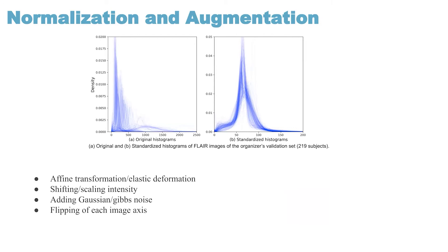In order to mitigate this, we used histogram standardization, resulting in quite homogeneous intensity distributions as shown in figure B for the FLAIR images. We employed histogram standardization for all four available channels: T1, T1 contrast, T2, and FLAIR.